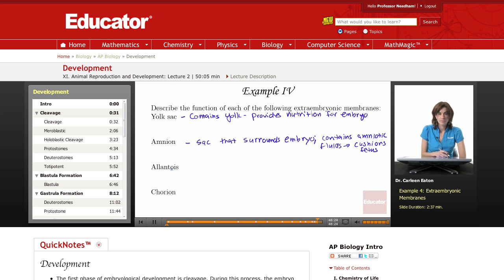Allantois. The allantois functions in gas exchange, partly. The chorion does too, but this also has a role in gas exchange and also stores waste products.